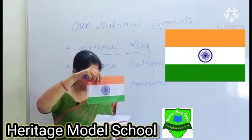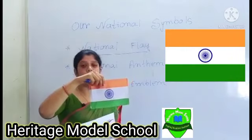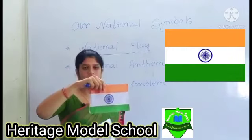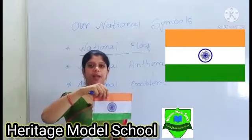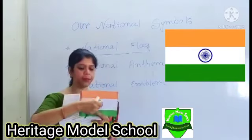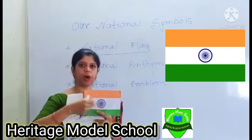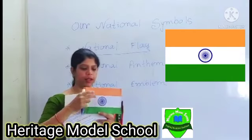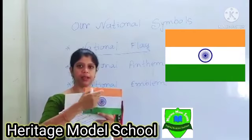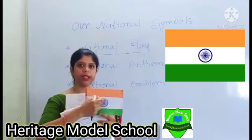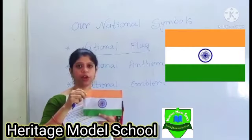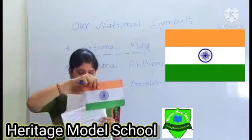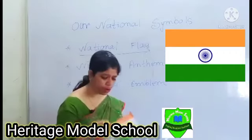At the bottom, the color is green. Green color stands for prosperity — prosperity means enrichment or success. At the middle of the flag, as you can notice, there is a wheel that contains 24 spokes.